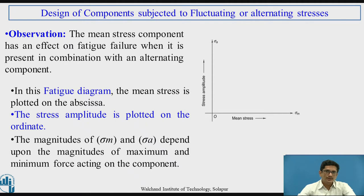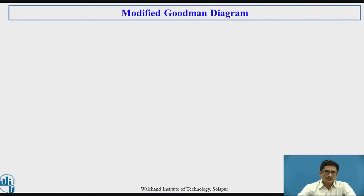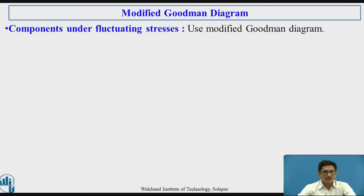If mean stress is zero, what is going to be the criteria for design? And if amplitude stress is zero, then what is the criteria for design? For components under fluctuating stresses, we need to use the modified Goodman diagram. So what is the modified Goodman diagram and how to construct it?